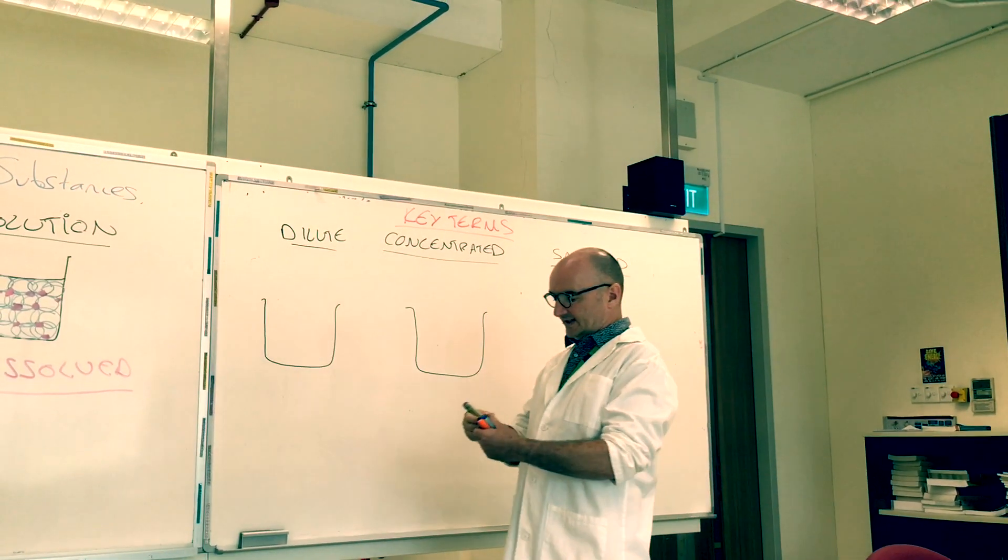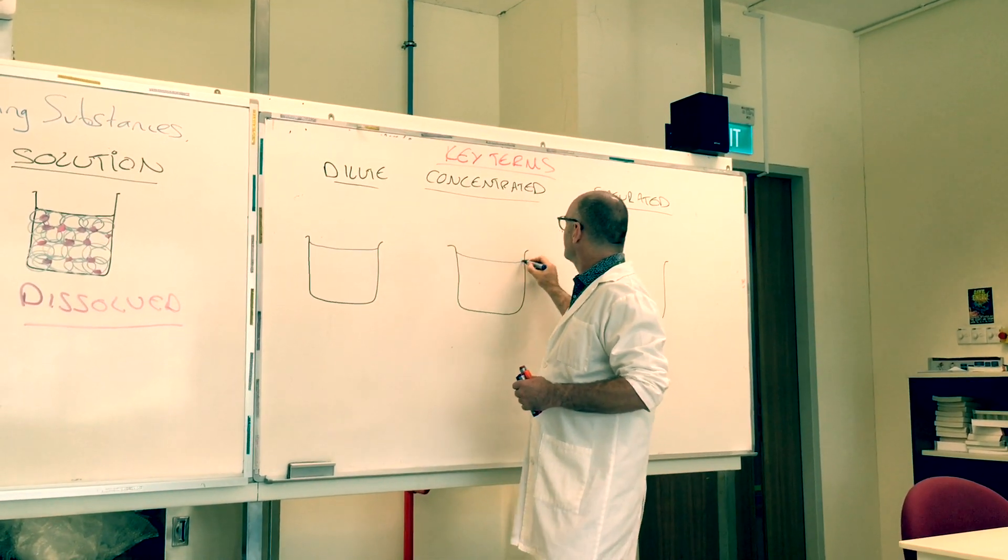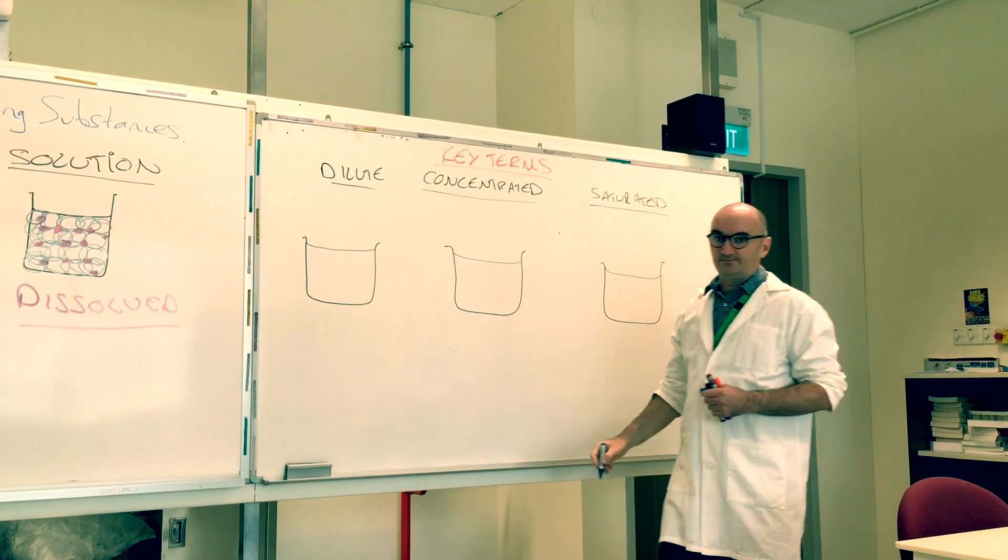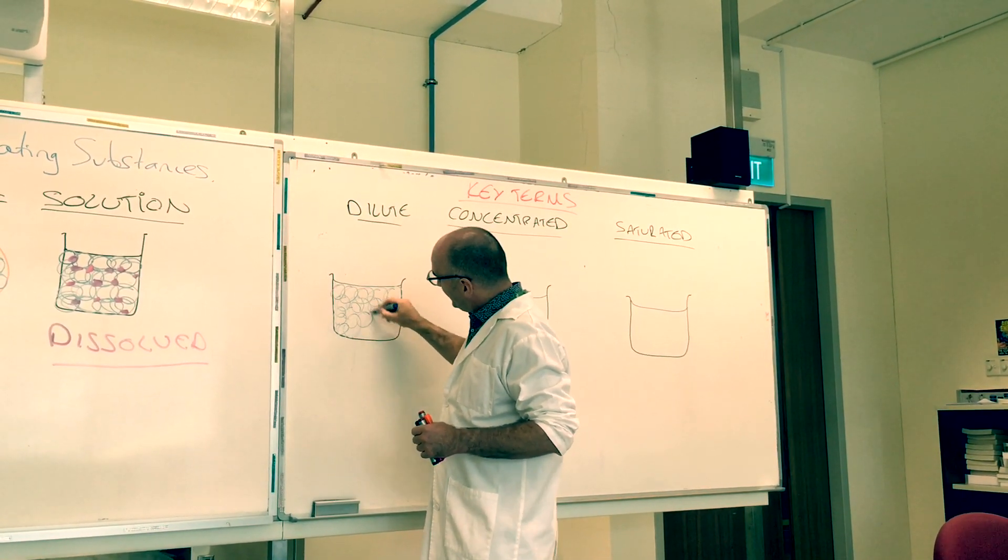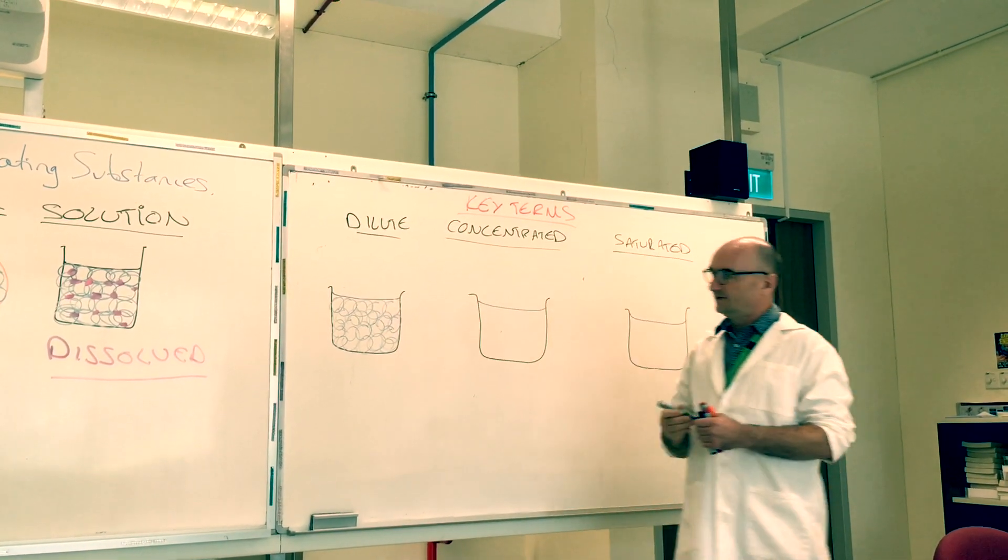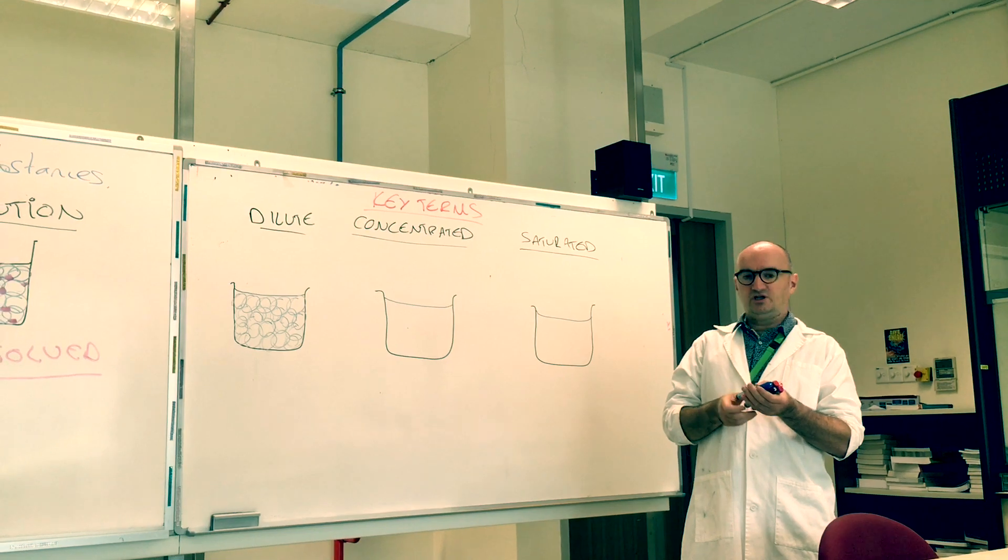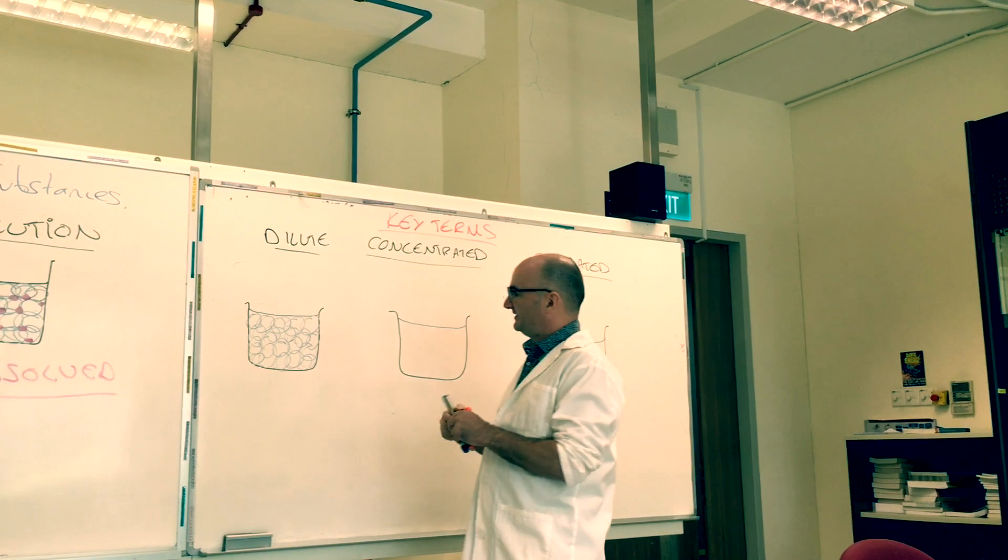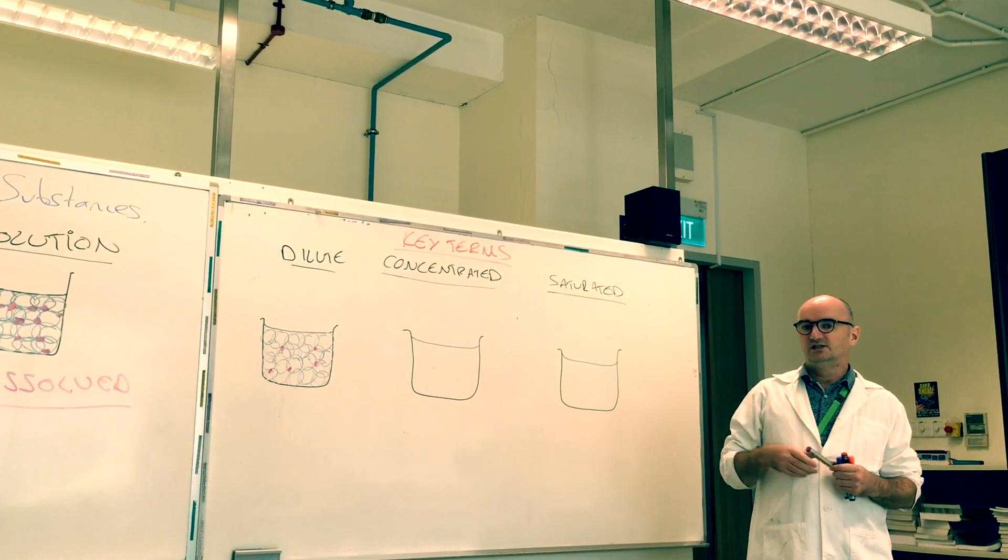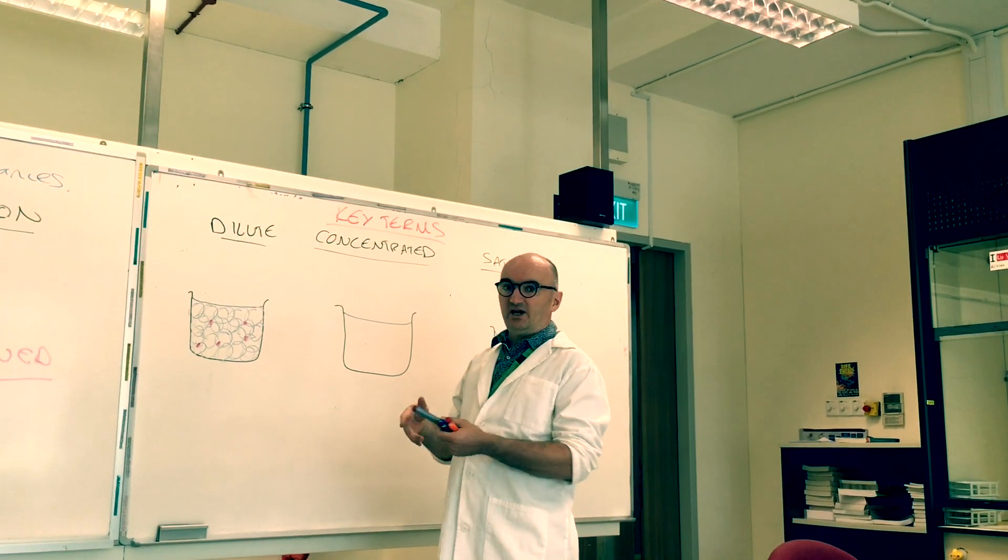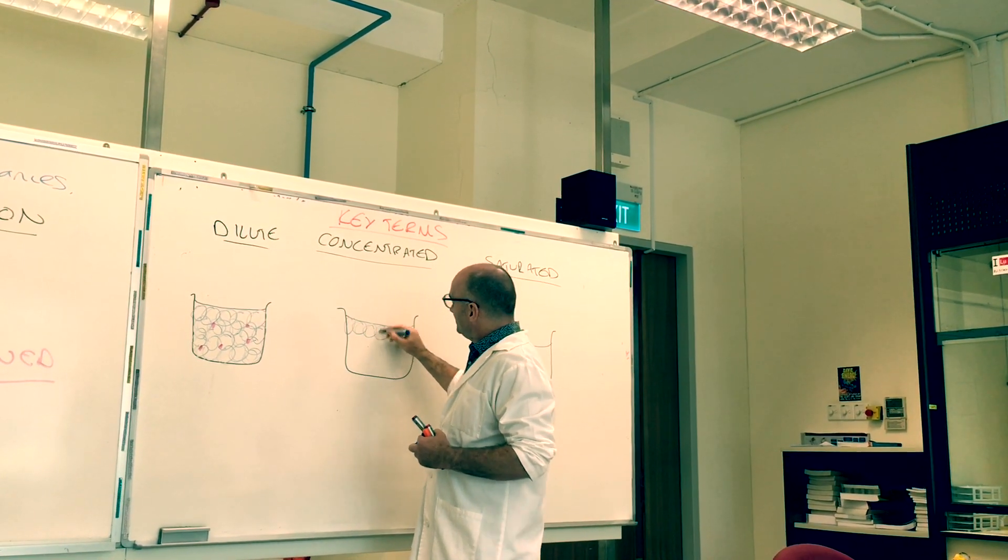So moving on, now we need to think about three other key terms on the learning outcomes: these are dilute, concentrated and saturated. So dilute, let's draw out water molecules, all molecules touching the walls of the container, that's the definition of a liquid, random order. A dilute solution might be like when you've been on camp and they don't give you enough squash in the water and it tastes really weak. There might only be four or five molecules of squash in a large volume of water, we call that a dilute solution.